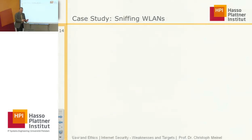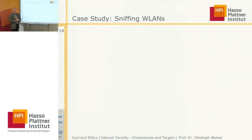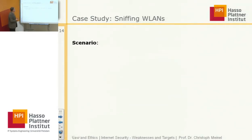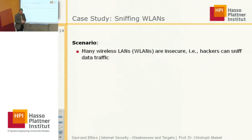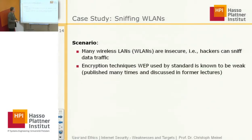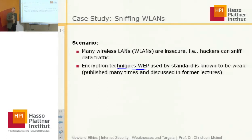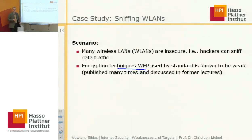Now let's consider case studies and understand how the laws we discussed can be used to decide what's allowed and what's forbidden. The first case study is sniffing a wireless LAN. The scenario: many wireless LANs are insecure, making it very simple for a hacker to sniff all data traffic. One reason is that the encryption technique that comes by standard with wireless LAN — the WEP protocol — is known to be weak. This was published several times and we discussed these weaknesses in a former lecture.